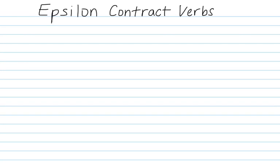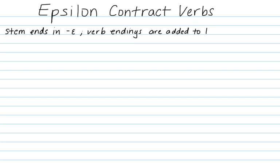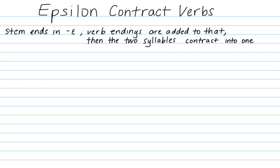This video introduces you to epsilon contract verbs. We'll look at contractions and accents. Epsilon contract verbs are verbs where the stem ends in epsilon. To this we add our regular verb endings, which results in having two vowels next to each other. Those vowels then contract into one syllable. For our sample verb 'I love,' the Greek is phileo, the stem is phile, and the ending is o.